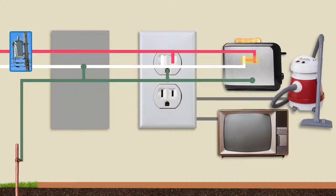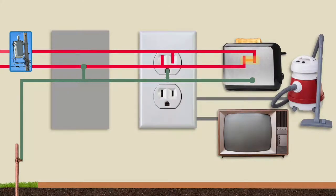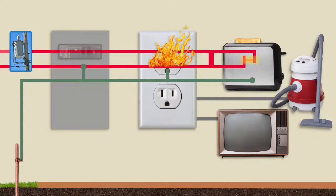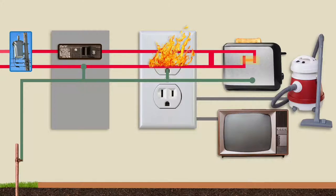If too many appliances are connected to the outlet, the wiring can overheat because more amps are drawn than what the wiring can handle. This can start a fire, as can a short circuit. To prevent this, a circuit breaker in the panel senses when current is too high and cuts the power.